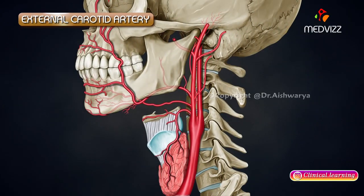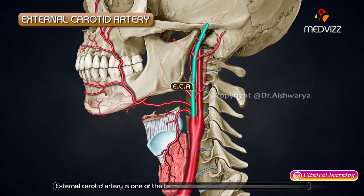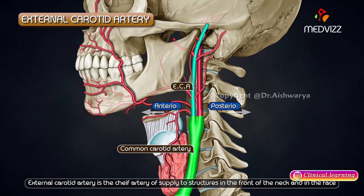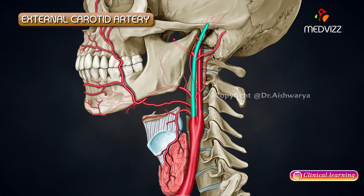The external carotid artery is one of the terminal branches of the common carotid artery. In general, it lies anterior to the internal carotid artery and is the chief artery of supply to the structures in front of the neck as well as in the face.